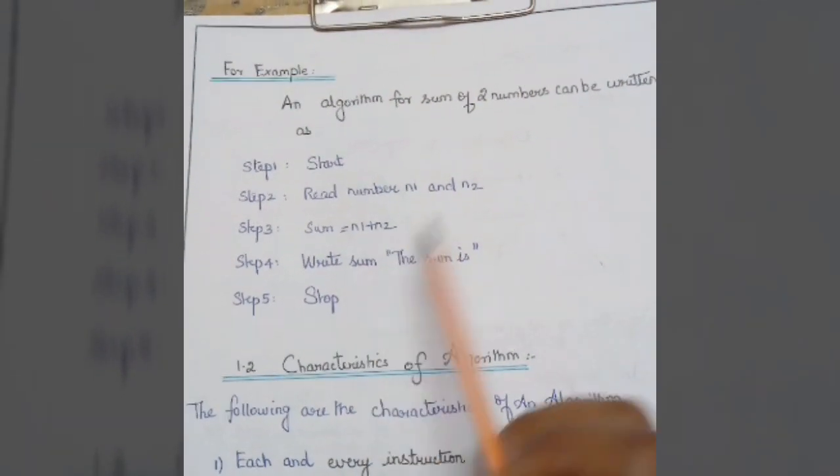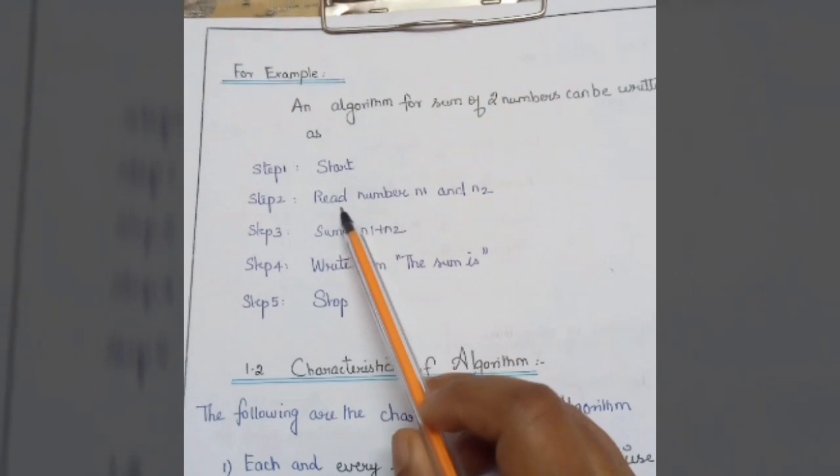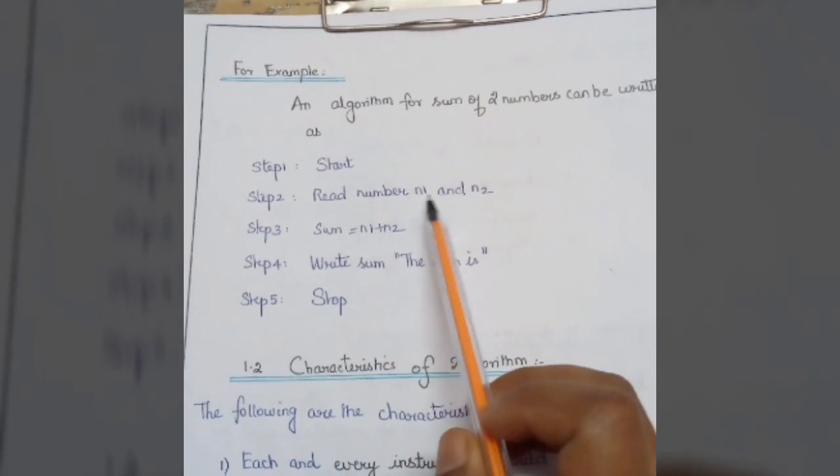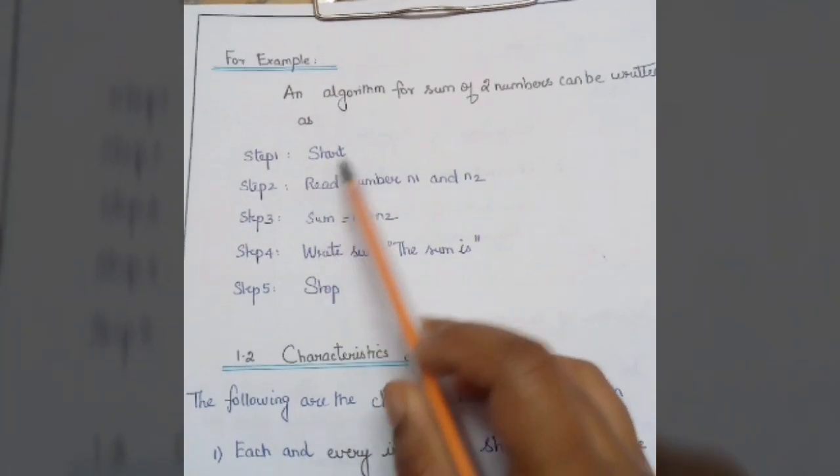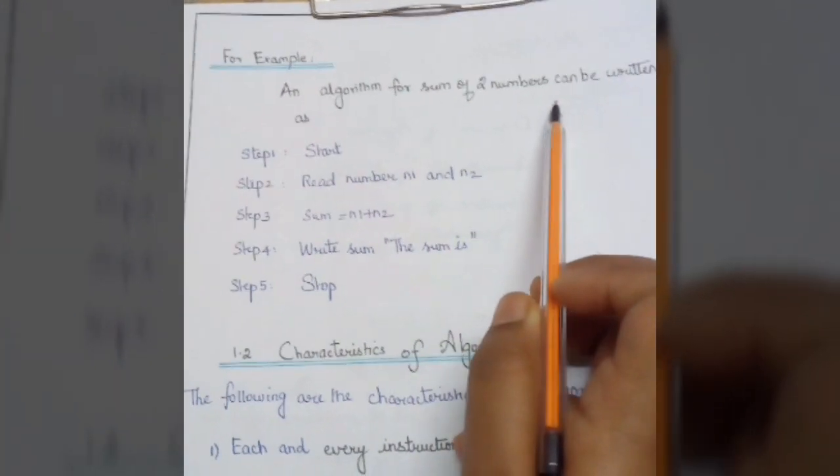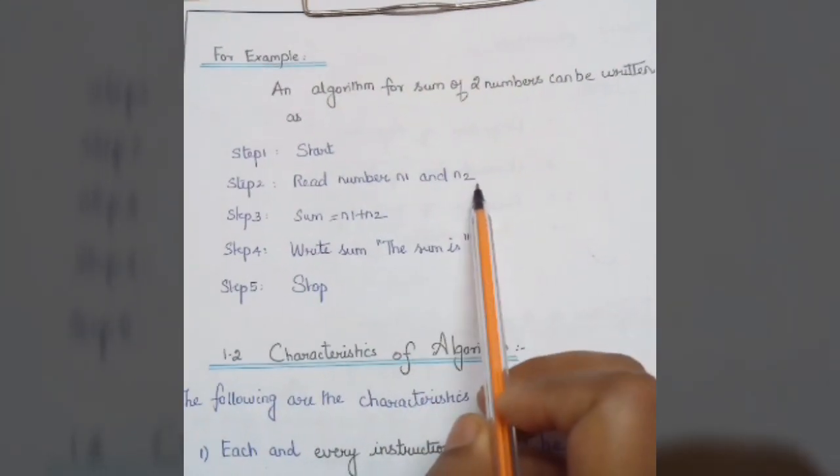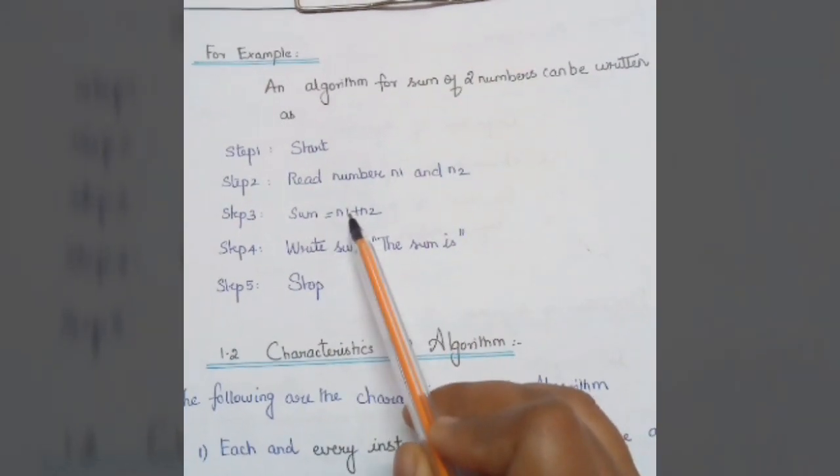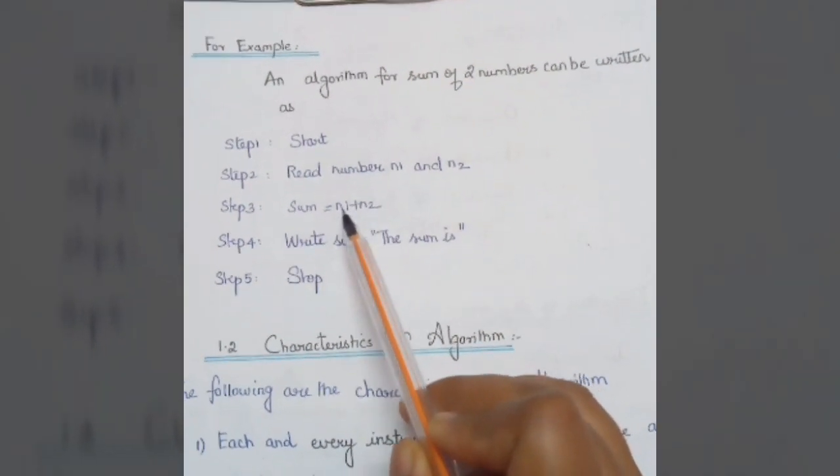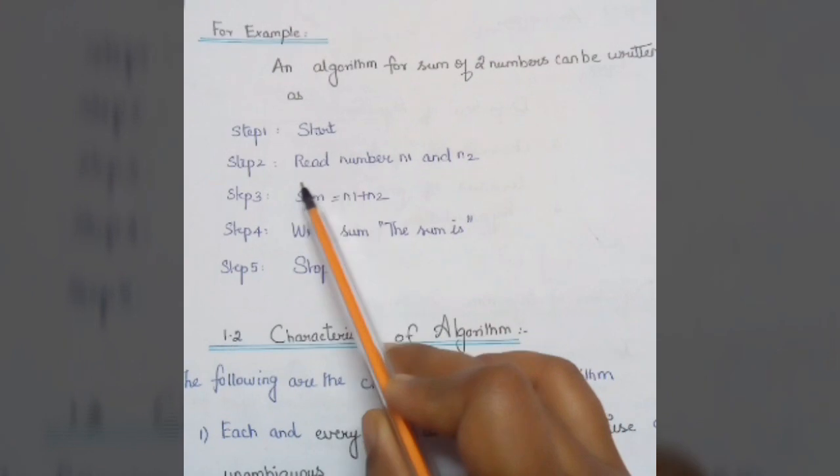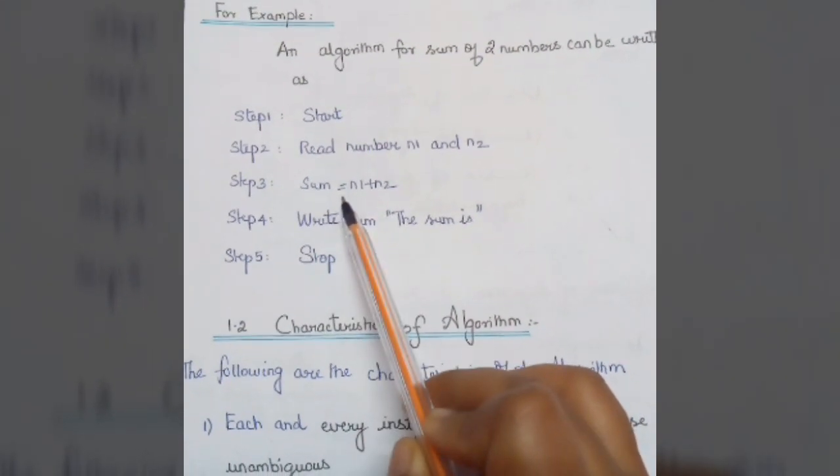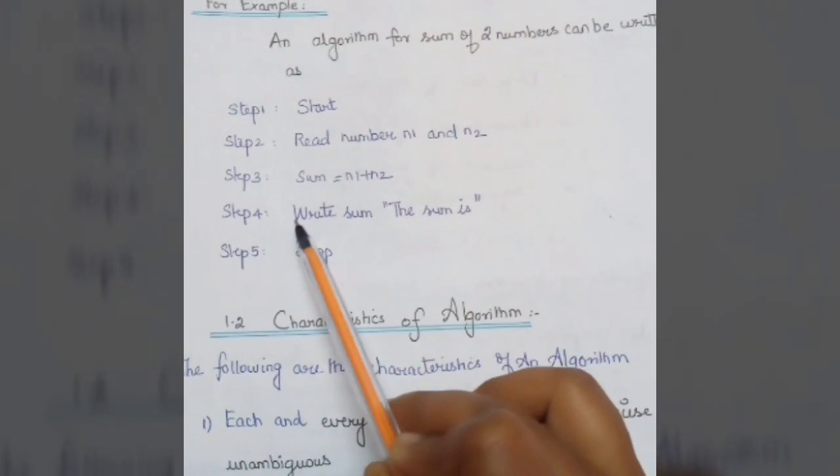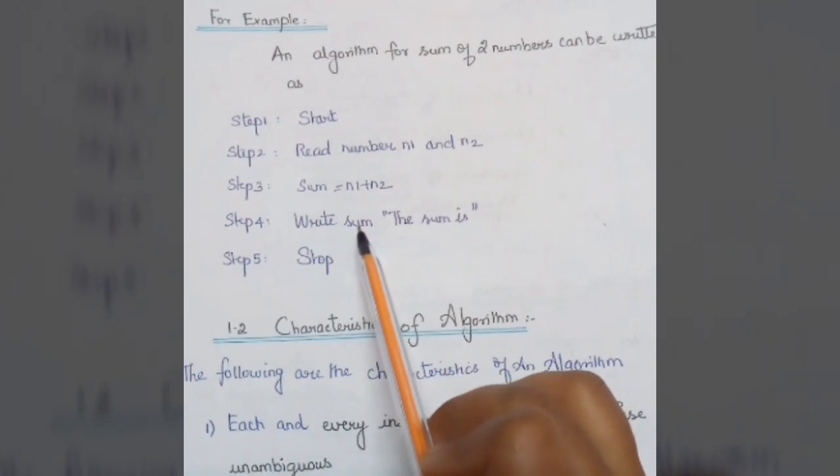The second step: read number one and two. You want to write an algorithm for summing two numbers, so you have to read n1 and n2 from the user. In the third step, we are adding n1 and n2 and storing it in the variable sum. The fourth step is you have to display the sum, and finally stop.